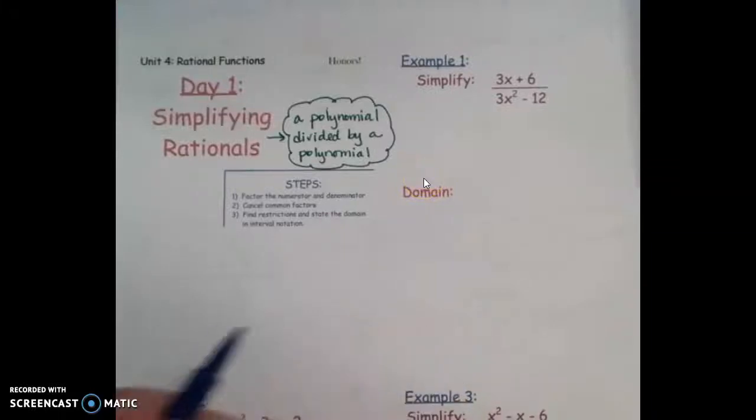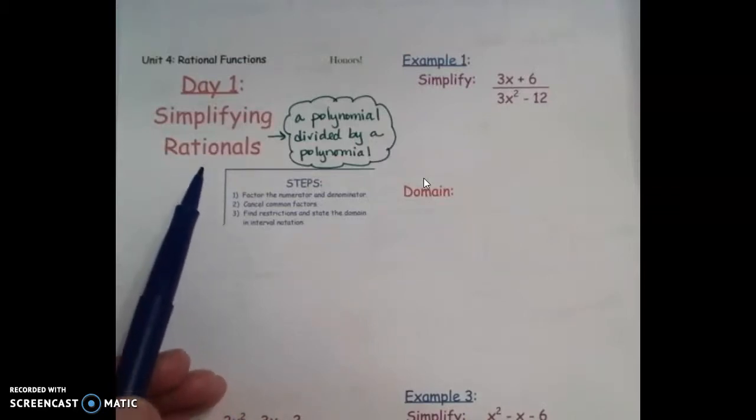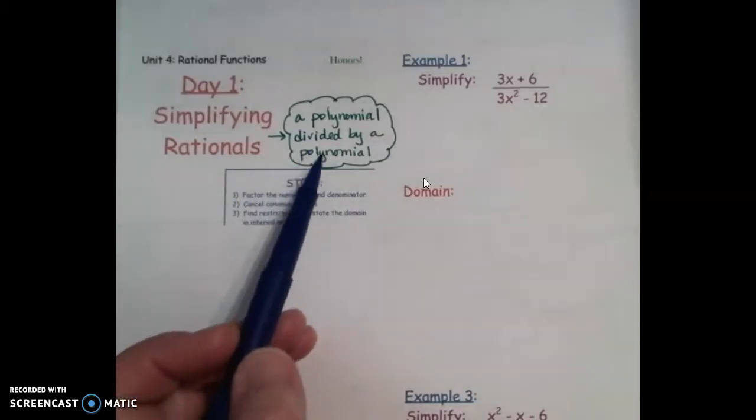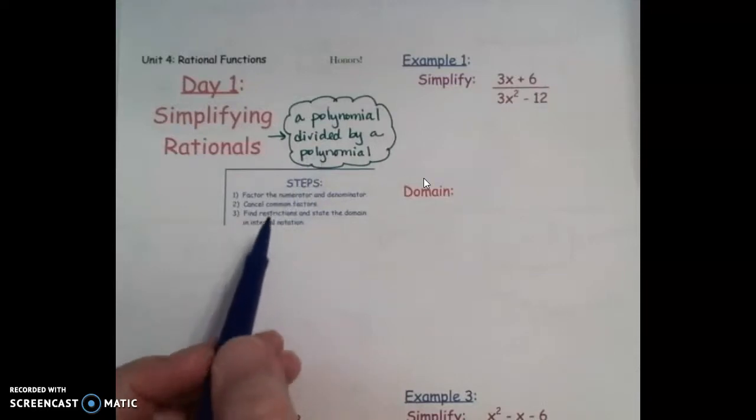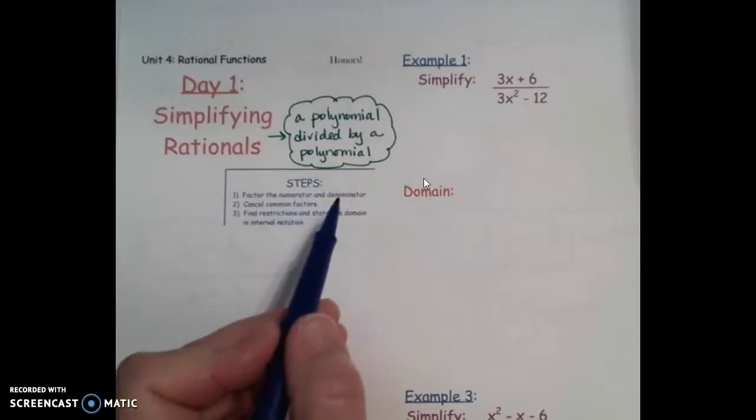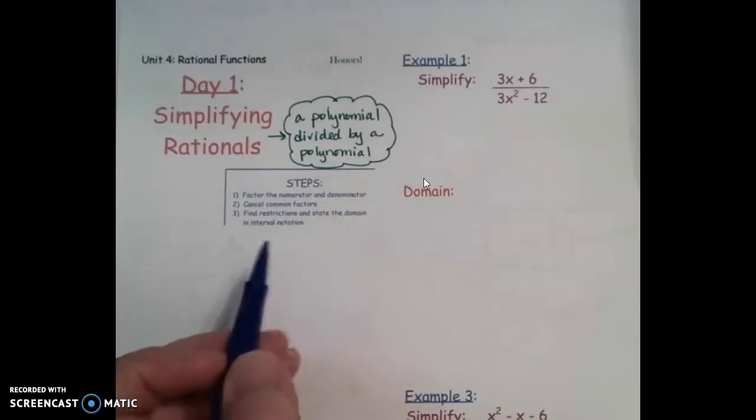Okay, today we will be starting Unit 4, which is rational functions, and we're going to start by simplifying rationals. If you ask what is a rational, it's simply just a polynomial divided by a polynomial. So I put things in steps here for you. You want to factor your numerator and your denominator, then cancel out common factors, and then we'll find restrictions and state the domain in interval notation.